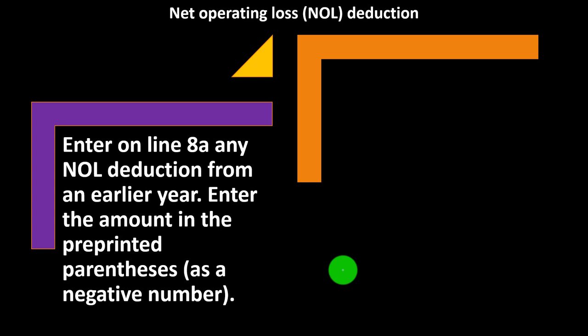Net operating loss — the NOL deduction. A net operating loss is something you're more likely to encounter on returns that have business income, such as a Schedule C business. If you're a tax preparer, you want to set goals and decide where to focus: returns with business components and more complexity like NOLs, or simpler returns, possibly building a referral network for the complex ones.